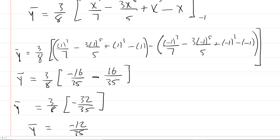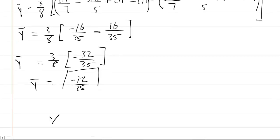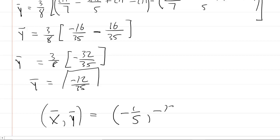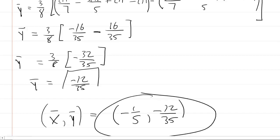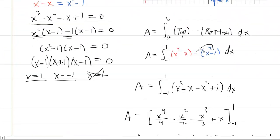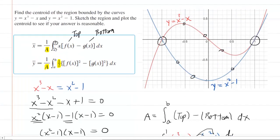Putting it all together, the centroid has x-coordinate negative 1 fifth and y-coordinate negative 12 thirty-fifths. To verify intuitively, negative 1 fifth is about negative 0.2 and negative 12 thirty-fifths is about negative 0.34, which places the centroid right around the geometric center of this unusual-looking bounded region — so that makes intuitive sense.